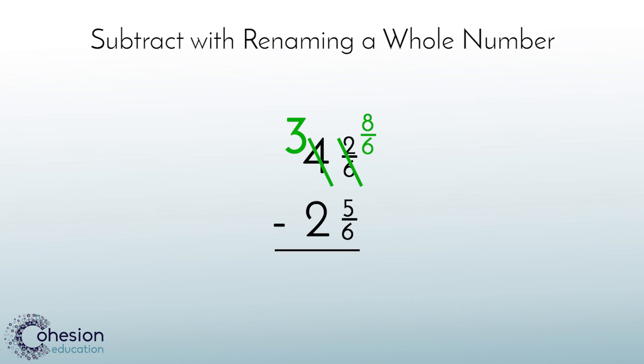With a mixed number that I can now subtract from, I will follow the basic steps we reviewed at the beginning of this lesson. 8 sixths minus 5 sixths equals 3 sixths and 3 minus 2 equals 1. This creates the mixed number 1 and 3 sixths. So 4 and 2 sixths minus 2 and 5 sixths equals 1 and 3 sixths.